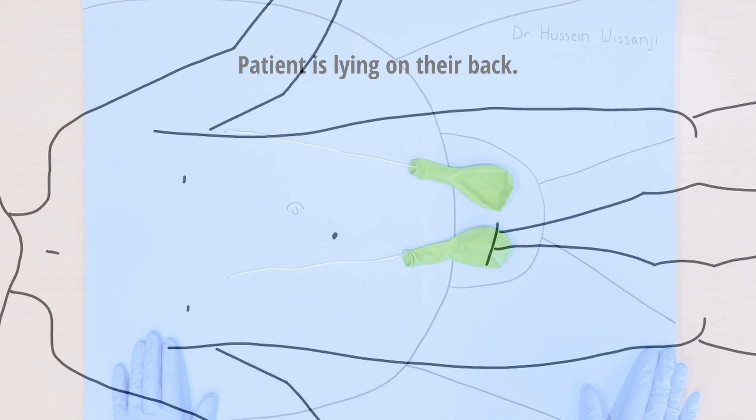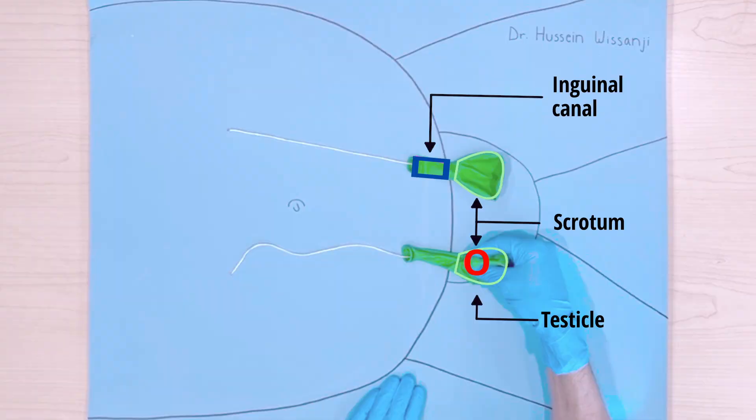I begin the exam with the patient lying on their back, their head to my left and their feet to my right. Here you can see the scrotum in green. The testicle will be highlighted in a red circle throughout the video and the inguinal canal would be in a blue box on this picture.